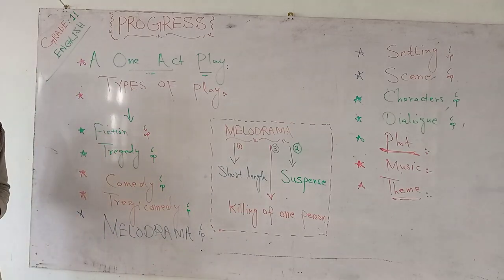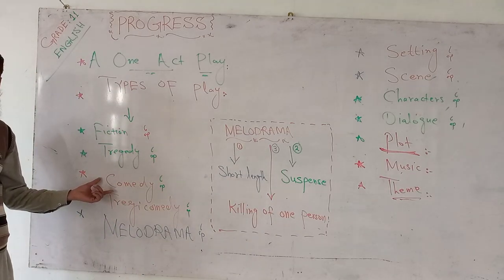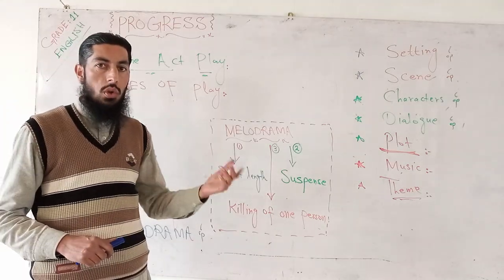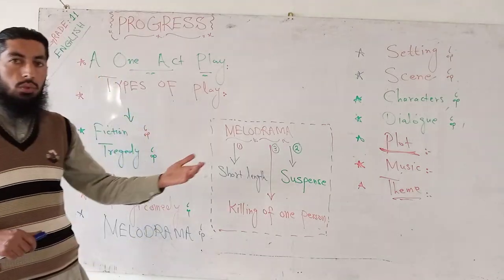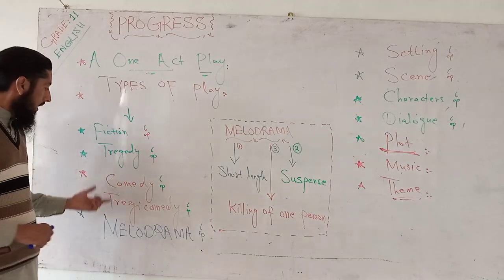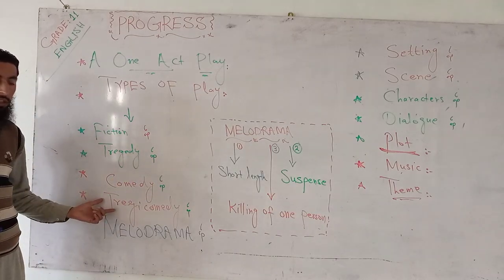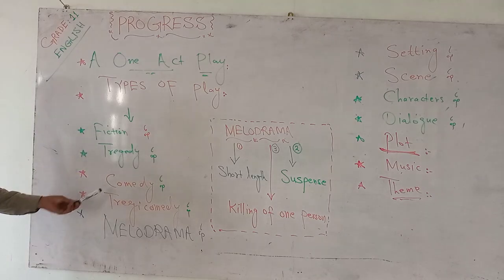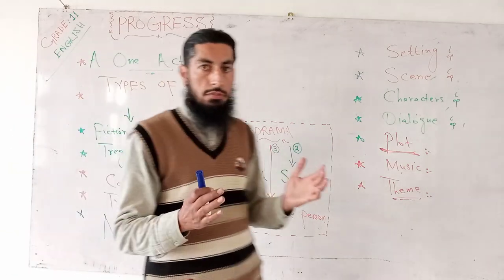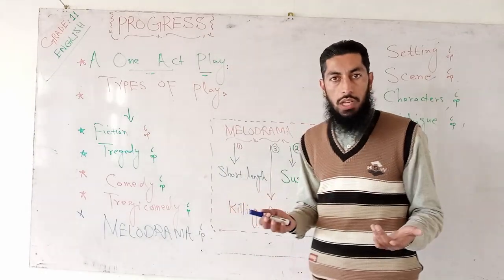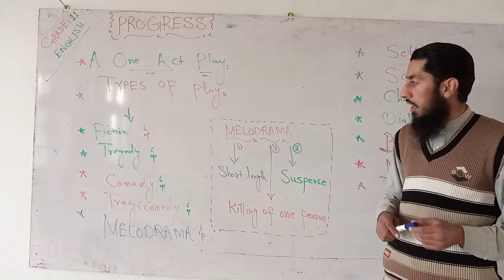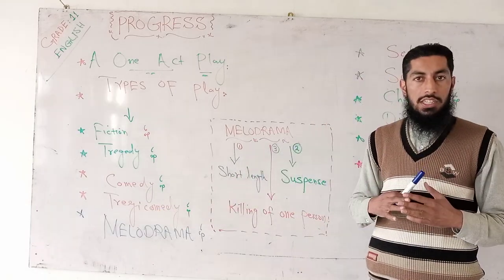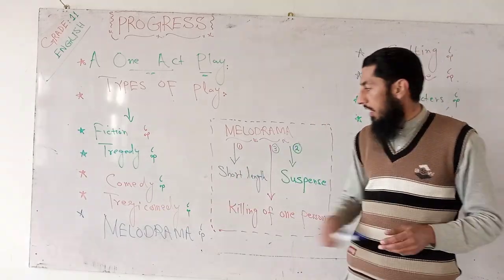Next comes comedy. Comedy is a type of play which has a happy ending, a joyful ending which makes you pleased. Then comes tragicomedy. This is the mixture of both tragedy and comedy — there are different tragic incidents as well as comic incidents. So mixture of tragedy and comedy is tragicomedy.